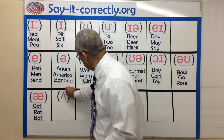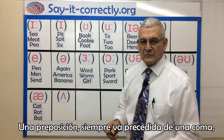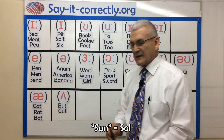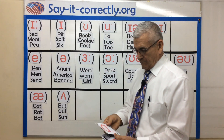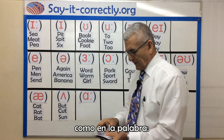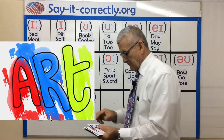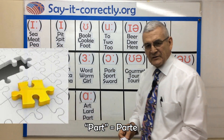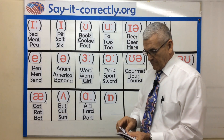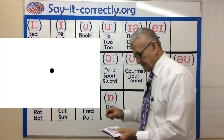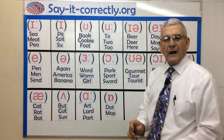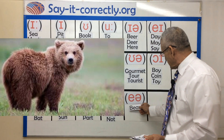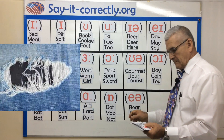Another sound — in the word butt, cut, sun. This is the R, right here, like in the word art, lard, part. Then dot, mop, nut. And bear, tear, wear.